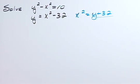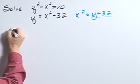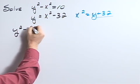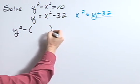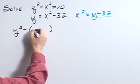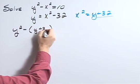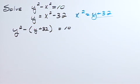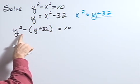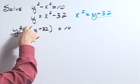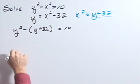Now let's substitute y plus 32 into our first equation. So y squared minus, instead of x squared, I'm going to place y plus 32, equals 10. Now let's simplify by distributing our negative, or negative 1 if you want to think about it that way, throughout.